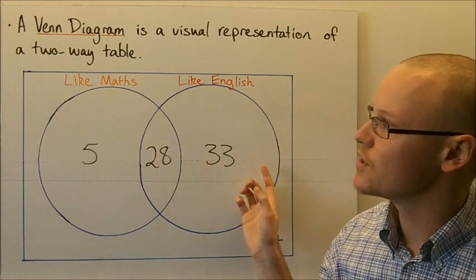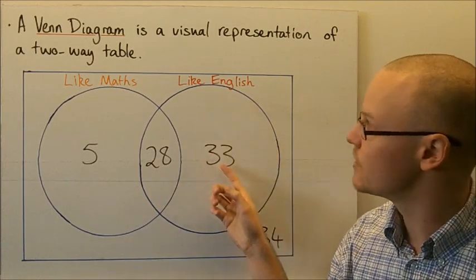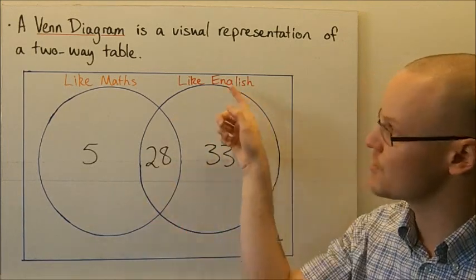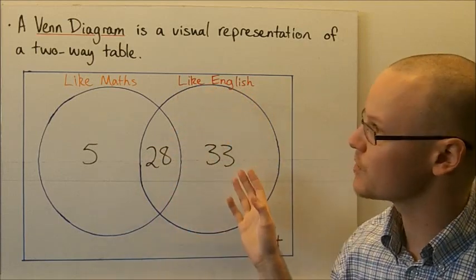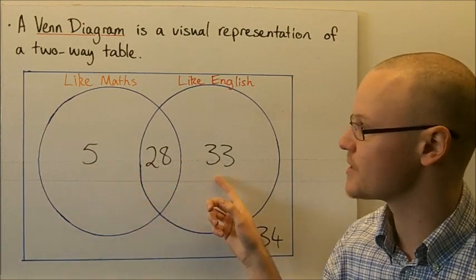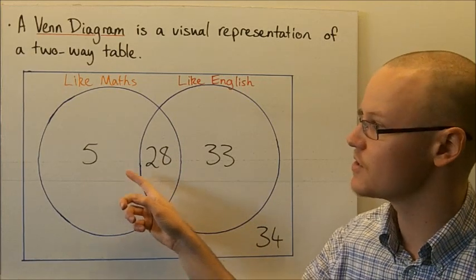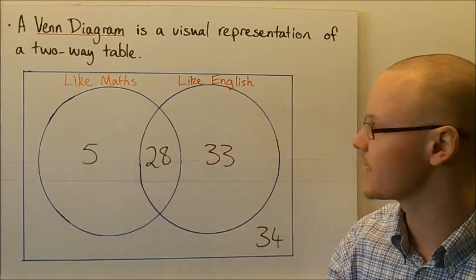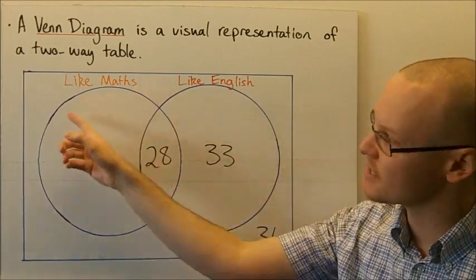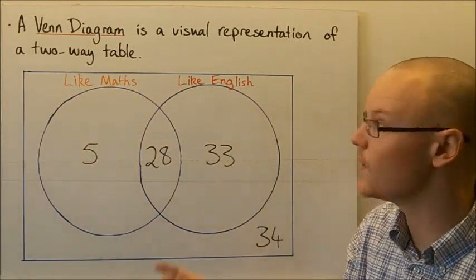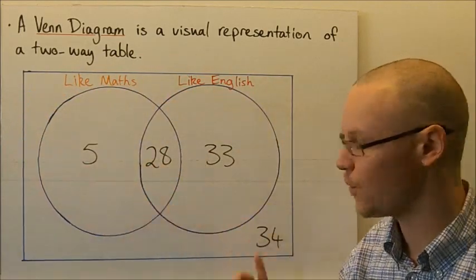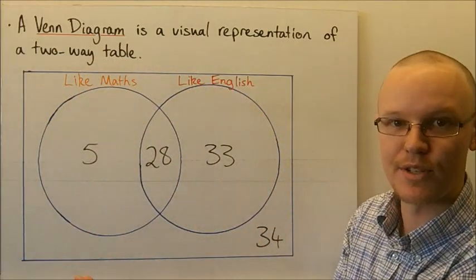The total number of students who like English is 28 plus 33, which is 61 students. The total number of students that like Maths or English is the addition of all the numbers together, giving 66 students. Adding 66 and 34 gives us the total number of students surveyed: 100.